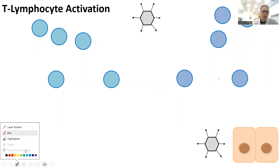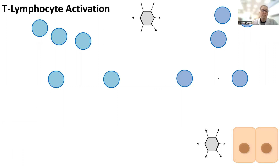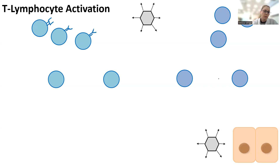Why are there two different populations? Because those two different populations create two different types — really, four different types of T cells — and each T cell does something different. You have to activate both those populations. These are mature T cells, matured by the thymus gland. The T cells have receptors on their surface. This is not like an antibody receptor — it's a straight receptor, but it also has a variable region.